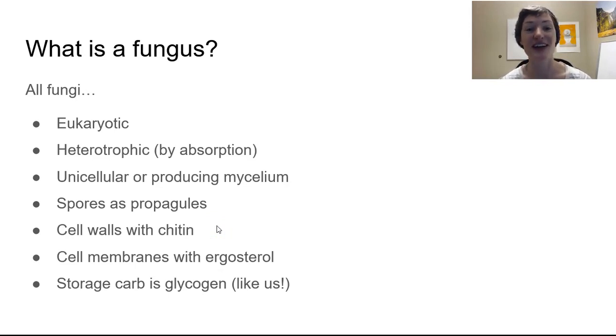These are terms that I'm going to use a lot: haploid and diploid. And for fungi, I'll even use this weird term, dicaryotic, which means two different haploid nuclei that have not fused together. So they have haploid spores as propagules.